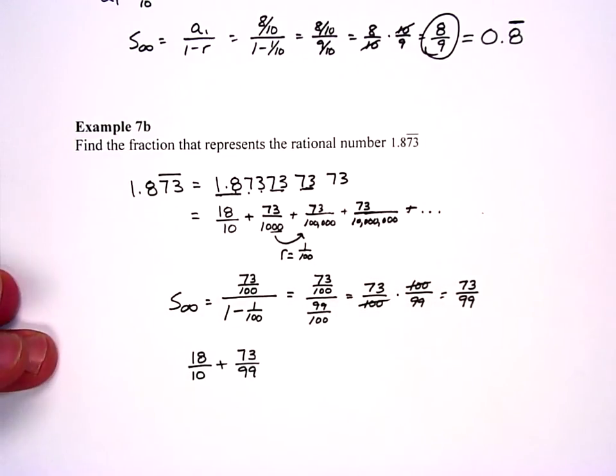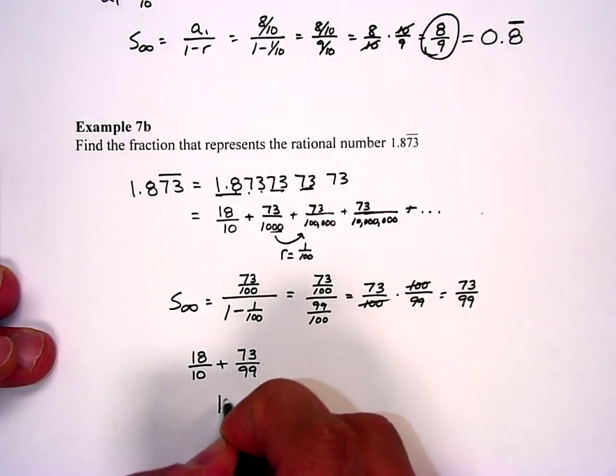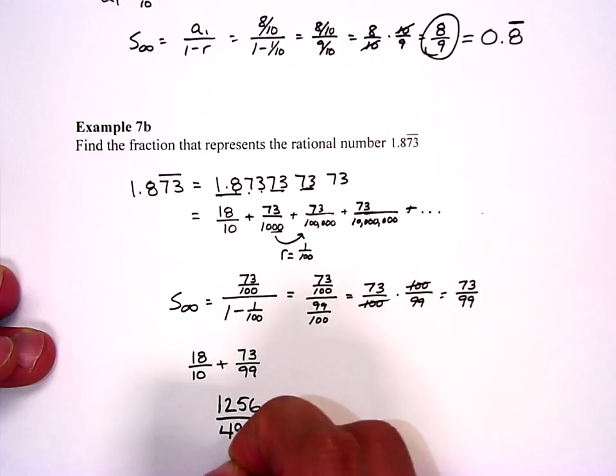I'm going to let my calculator do that. And so I got 18 over 10 plus 73 over 99, and I get 1256 over 495.